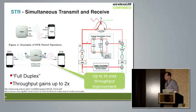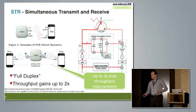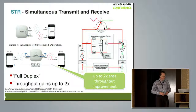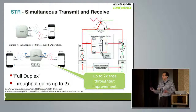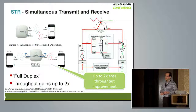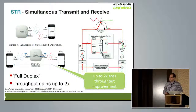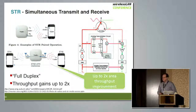Simultaneous transmit and receive — full duplex. Right now you cannot transmit while you receive, but by using digital and analog cancellation techniques that can be made possible. Transmit and receive will no longer need to be separate, and the gains from simultaneous operation can be up to two times.